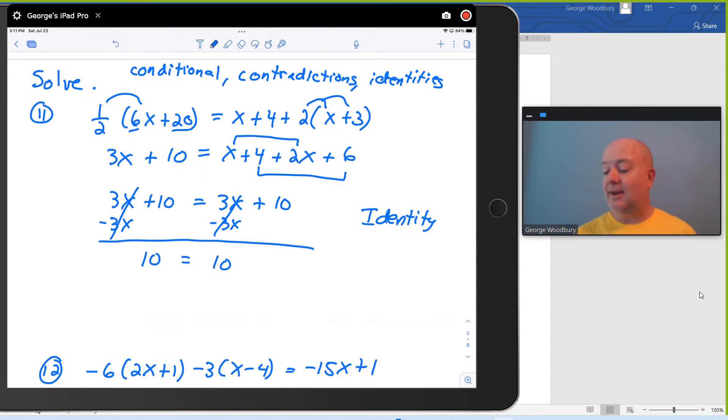This one's an identity because this resulting equation is true. That's a true statement. 10 equals 10 no matter what x is. And so we say that this is an identity and any real number is a solution. So the solution set is the set of all real numbers, which we write with that notation, the r with the extra back. So if the variables disappear and you're left with a true statement, that's an identity. The set of all real numbers is your solution set.